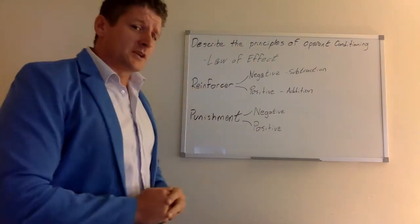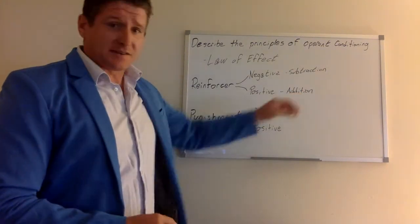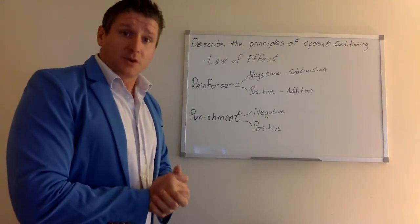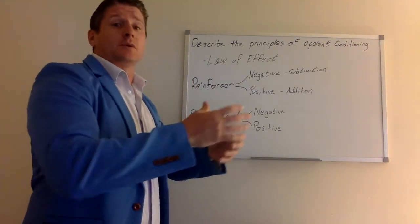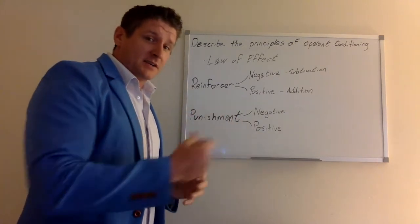A reinforcer can come in one of two ways. It can be a positive reinforcer where you're adding something, and that's what we traditionally think of. If we go back to Thorndike's puzzle box and I'm offering the food to that cat, that's an example of positive reinforcing.